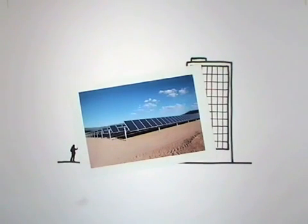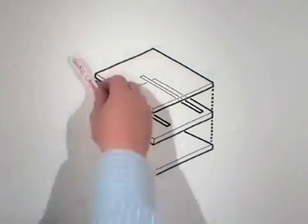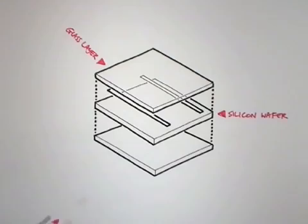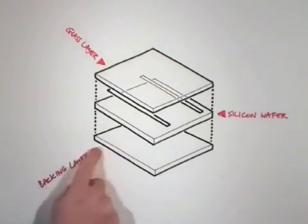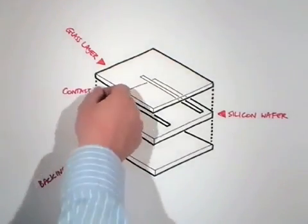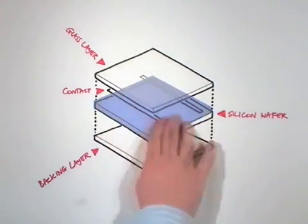But whether you have ten cells or a thousand, the principle is the same. Each cell is made of four main components: a top layer of glass, a silicon wafer, a backing layer, and conducting materials linking each side of the silicon wafer together in a circuit.